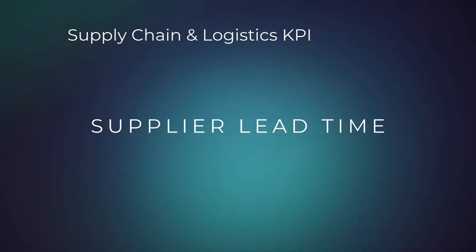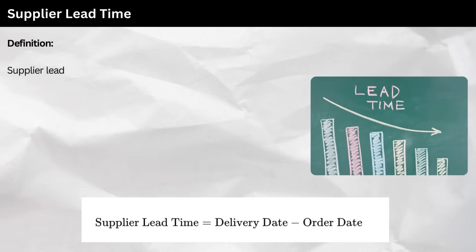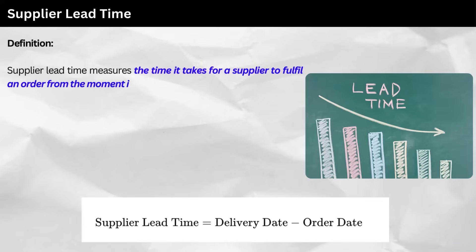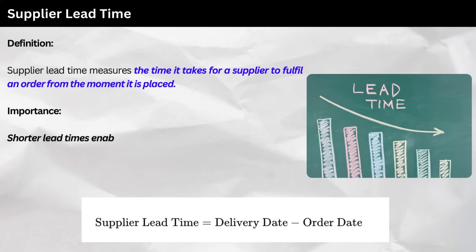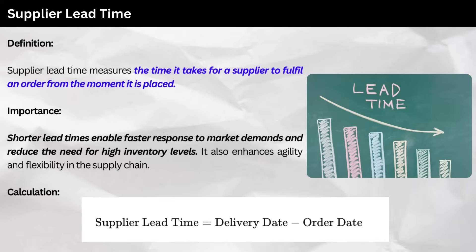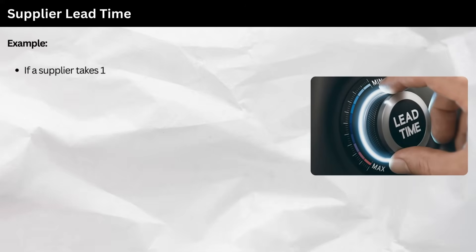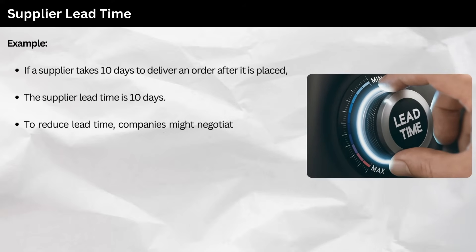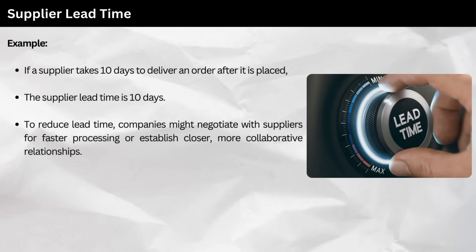7. Supplier Lead Time. Definition: supplier lead time measures the time it takes for a supplier to fulfill an order from the moment it is placed. Importance: shorter lead times enable faster response to market demands and reduce the need for high inventory levels. It also enhances agility and flexibility in the supply chain. Calculation: as follows. Example: if a supplier takes 10 days to deliver an order after it is placed, the supplier lead time is 10 days. To reduce lead time, companies might negotiate with suppliers for faster processing or establish closer, more collaborative relationships.